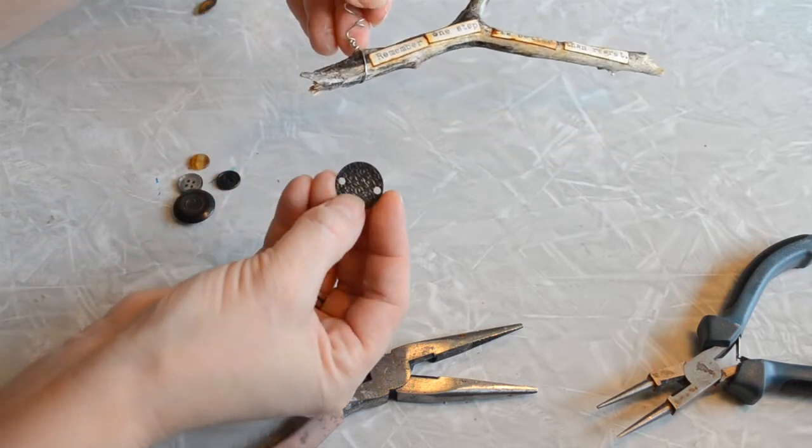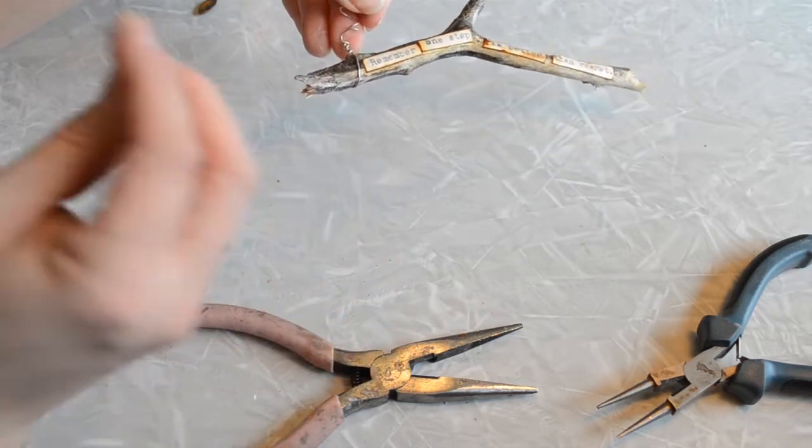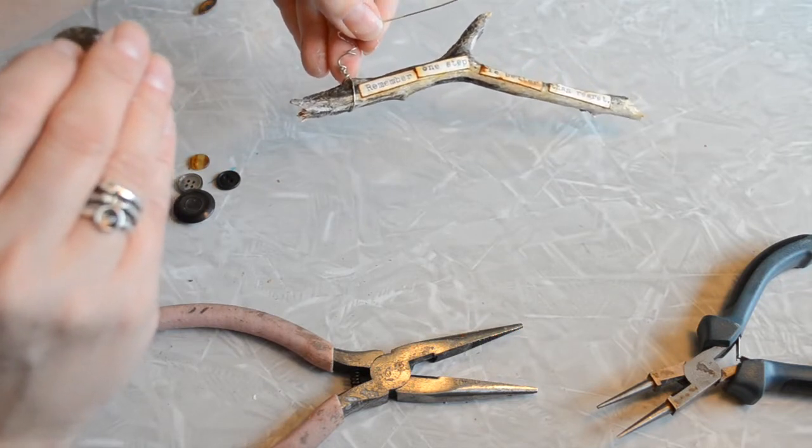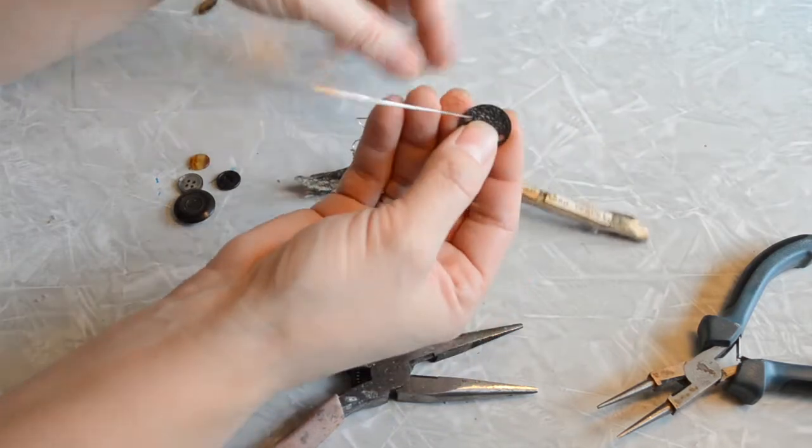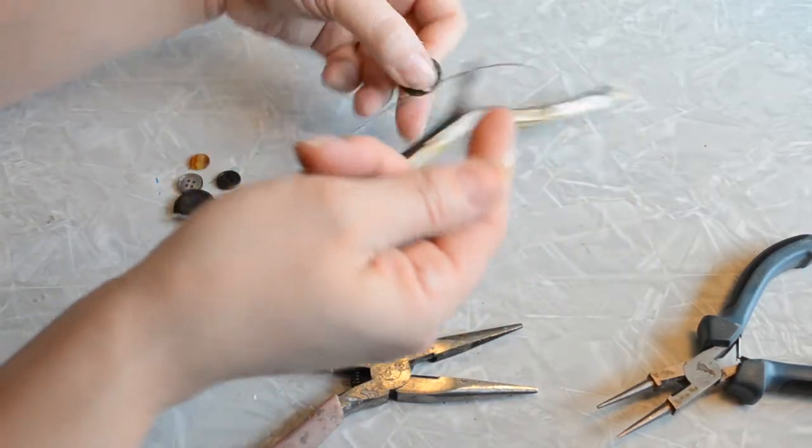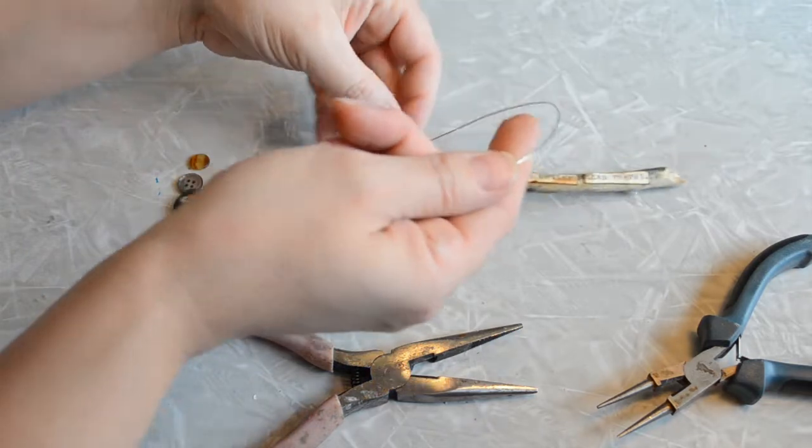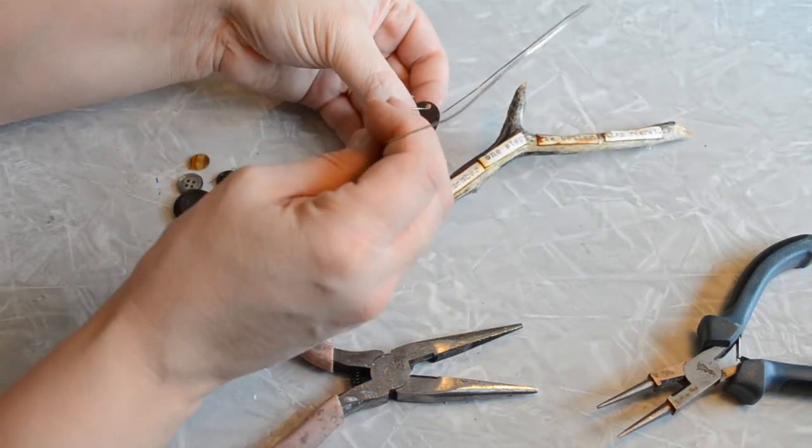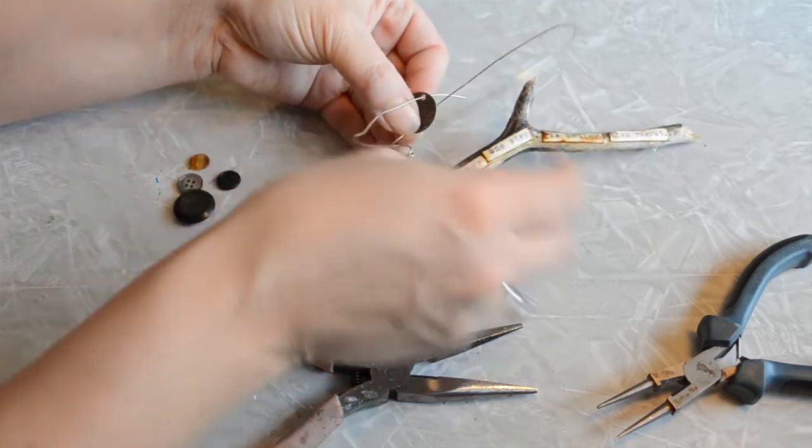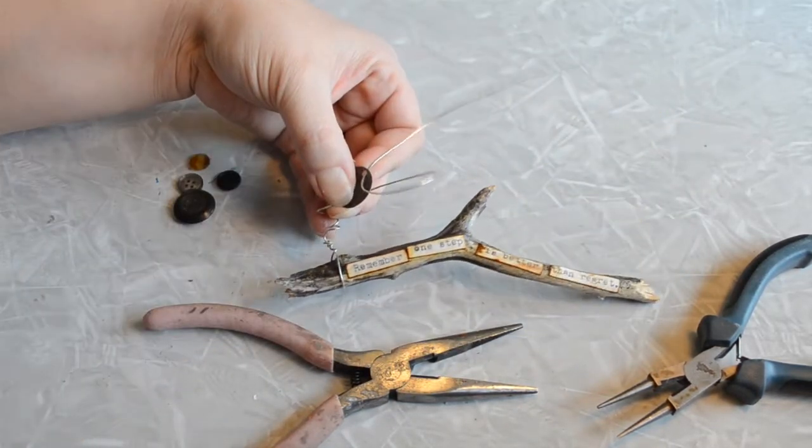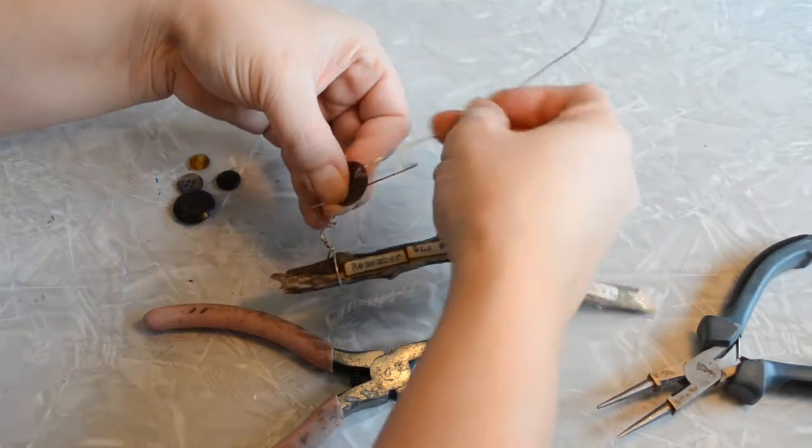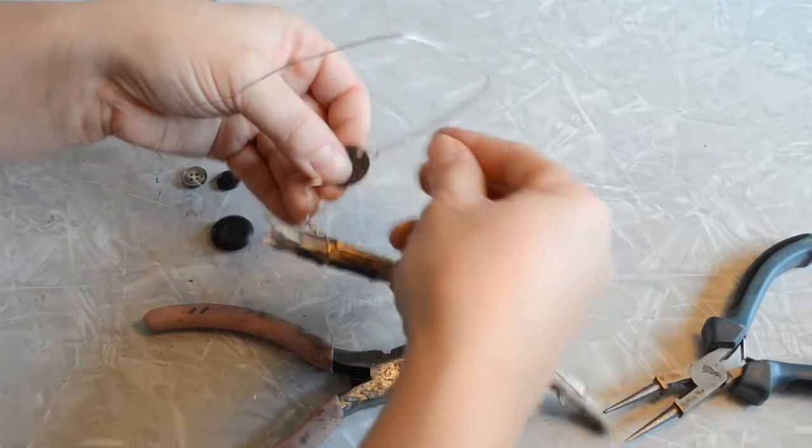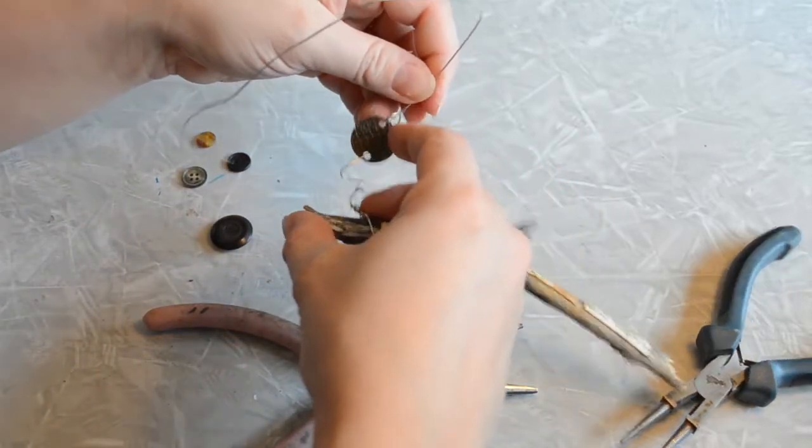That's going to stop the button or whatever I have from going too far. I found this cute little thing. I don't know what it's from, but I think I am just going to weave this on. It has two holes in it. I'm going to go ahead and bring that down and then put my wire through the second hole.